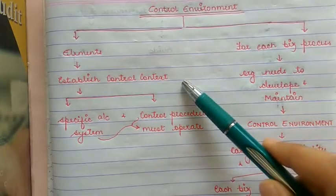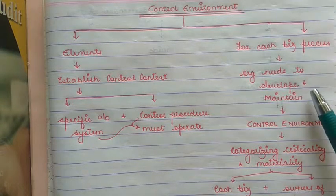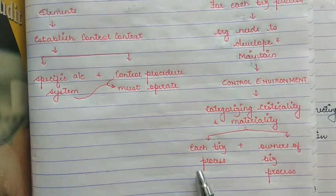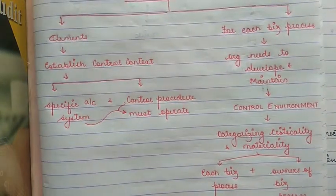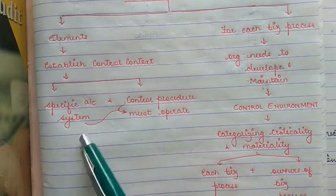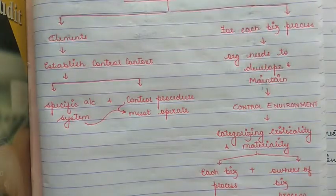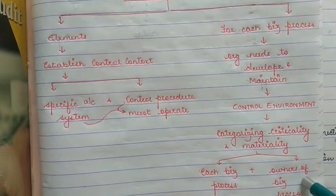To summarize: the control environment includes elements which establish the control context in which specific accounting systems and control procedures must operate. Each business process must develop and maintain a control environment categorizing criticality and materiality of each business process plus the owners of the business process. Not only the business process, but the owners of the business process are also important to have an effective internal control system.